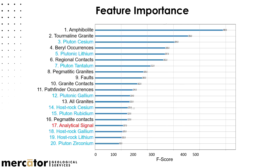A lot of people call it the black box, but we can look into it a bit. We get feature importance information — a ranking of all the features used by the AI when it identified the mineral occurrences. It's actually not too far off from what we came up with for our knowledge-driven model. Amphibolite at the very top is well known as the main host of LCT pegmatites in the James Bay area. We got tourmaline and beryl occurrences near the top, plus cesium, lithium, tantalum, and other pathfinders and geophysics. It reflects quite well what we came up with ourselves, so we were happy that the AI was able to learn this just by feeding it the same data set.